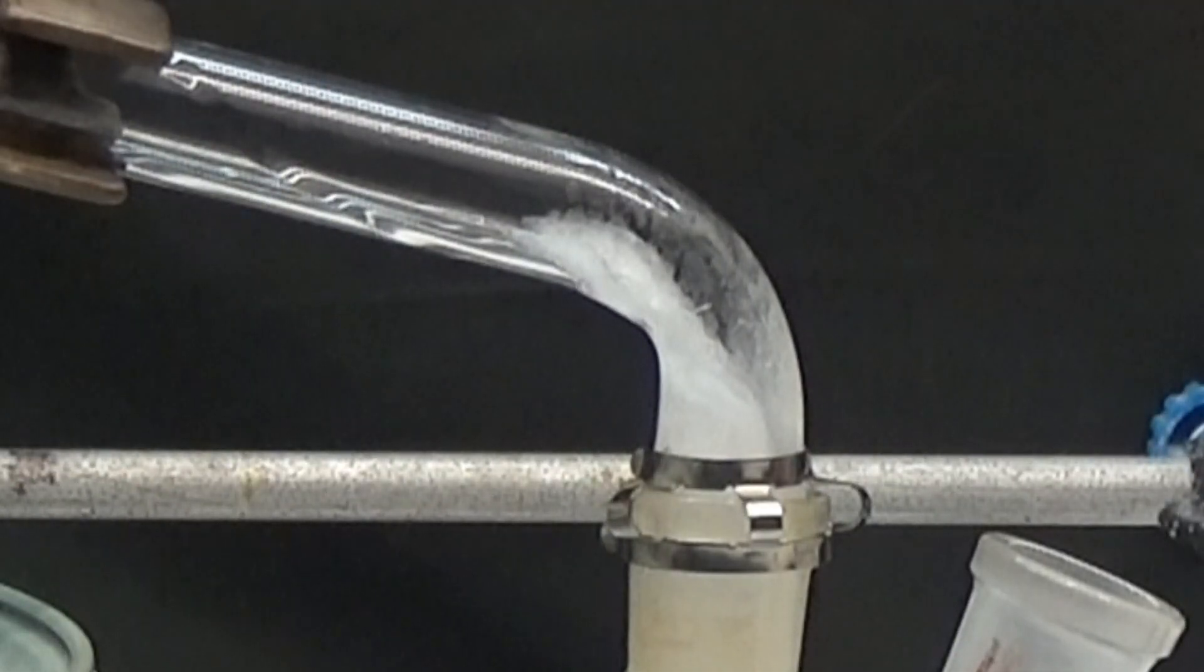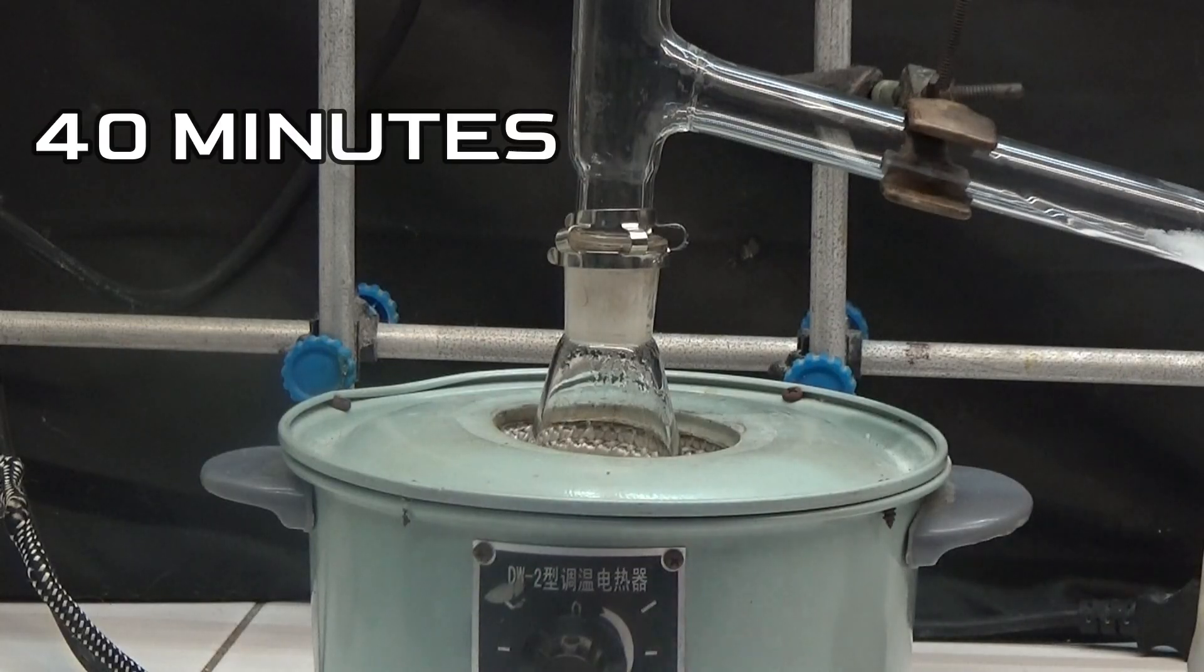We must be careful not to obstruct the tube, as this could cause overpressure and the system could explode. We leave it heating for about 40 minutes in total and stop the heat.